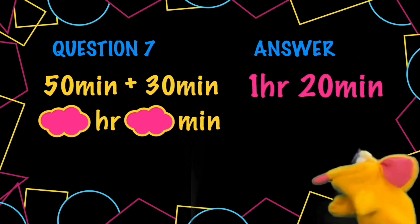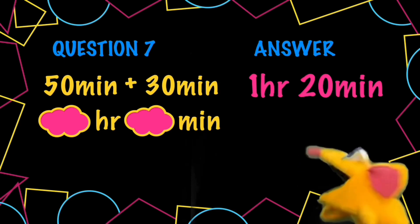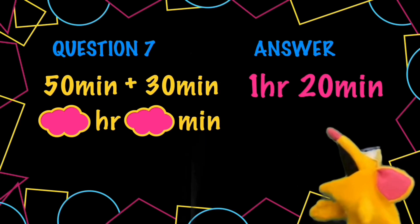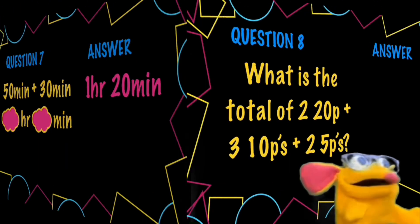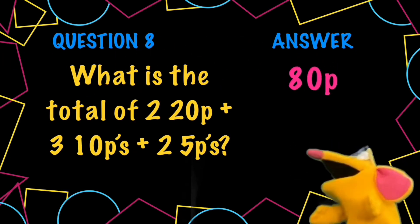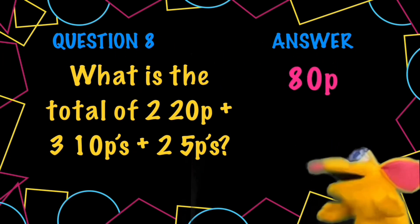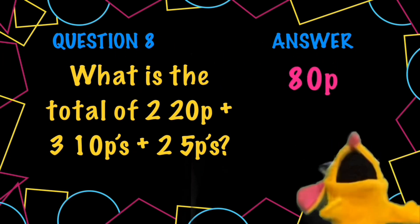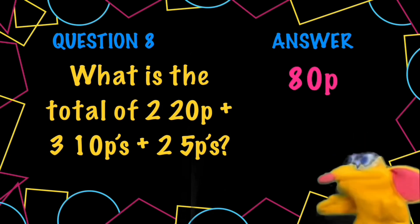I can't believe someone got the question printed wrong. Who did it? I want answers — oh, I get the answers! The total of 2 20p's is 40. 3 tens is 30. Plus 2 5p's is 10. Add them all together and you get 80p.